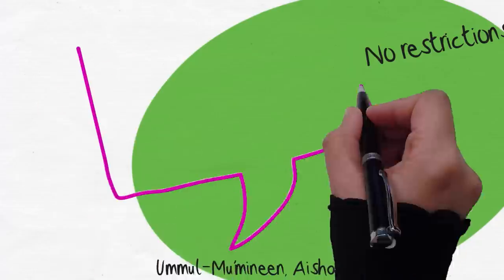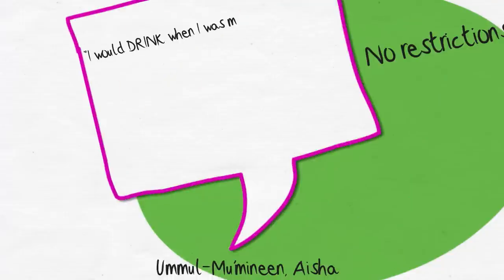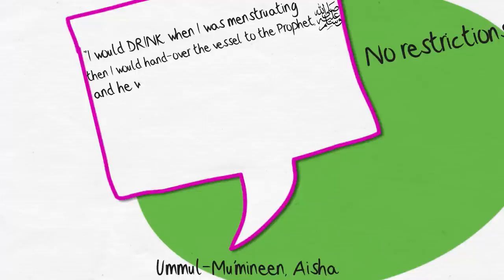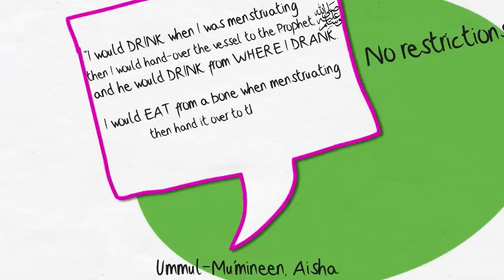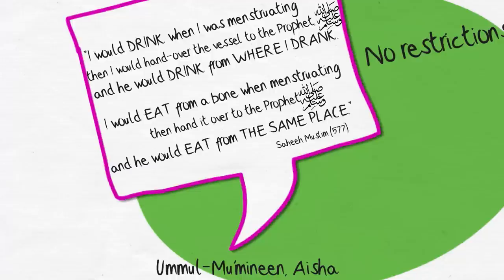Umm al-Mumineen Aisha radiallahu anha narrates: I would drink when I was menstruating, then I would hand over the vessel to the Prophet and he would drink from where I drank. I would eat from a bone when I was menstruating, then hand it over to the Prophet and he would eat from the same place.